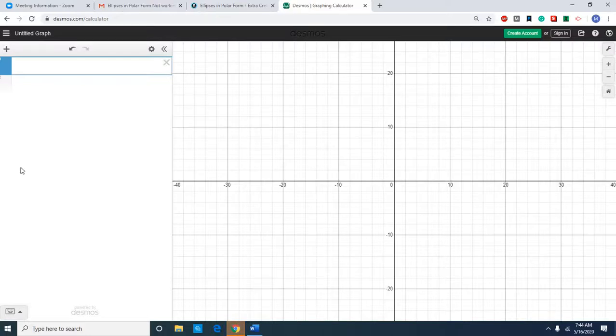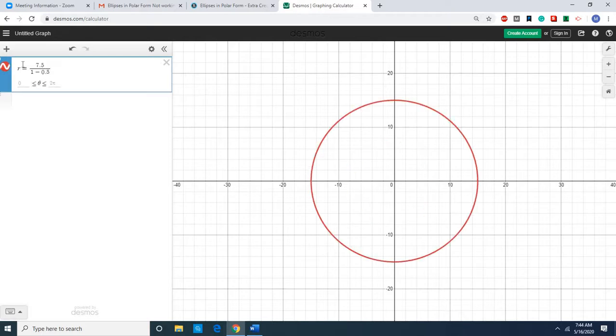Here's how you enter an equation in polar form in Desmos. The equation we're going to enter is r equals 7.5 over the denominator 1 minus 0.5 cosine theta. So r equals 7.5 over 1 minus 0.5 cosine, and then watch this.